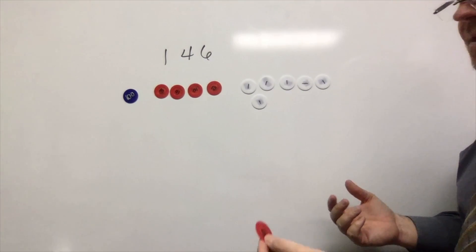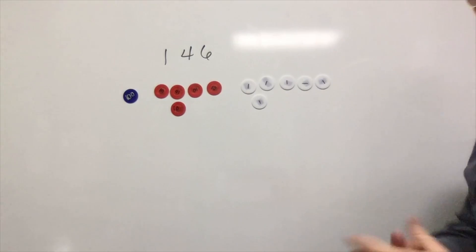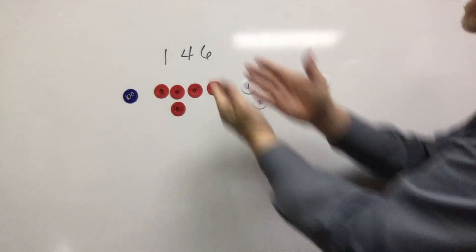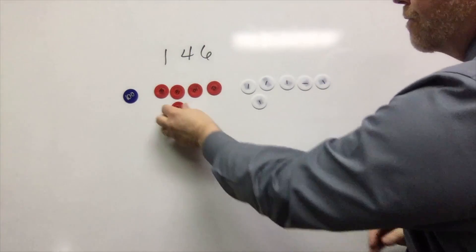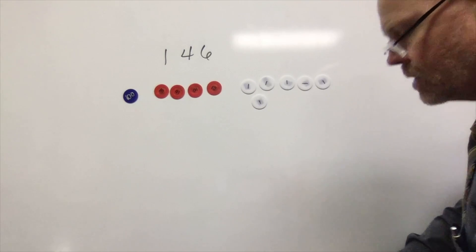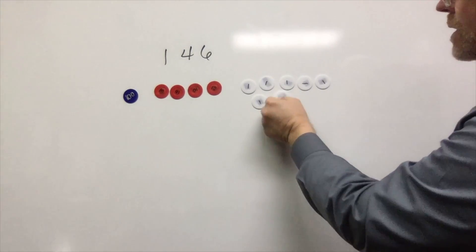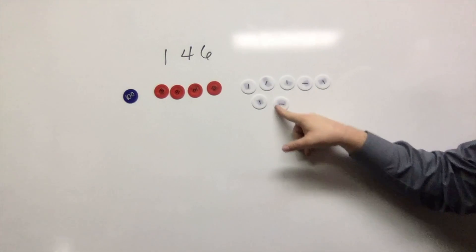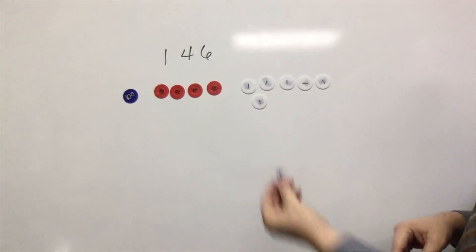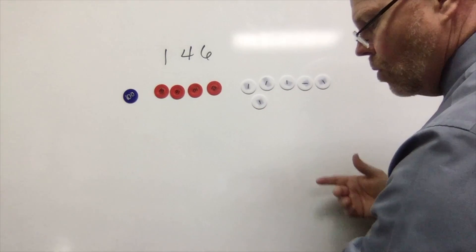We could just go boom—there it is: 156 is ten more than 146. Or I could say, what's one more than 146? It's right here: 147. So all of a sudden, identifying ten more becomes easy.